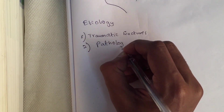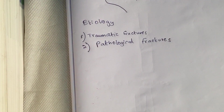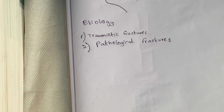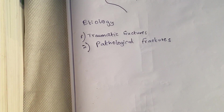Pathological fractures are fractures of a bone that has been weakened by disease. This can occur due to minimal or no force. Pathological fractures often go into nonunion. For example, fracture of a bone weakened by metastasis, pre-existing infections, tumors like osteosarcoma, Ewing sarcoma, multiple myeloma, osteoporosis, etc.